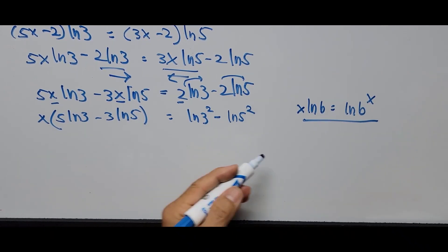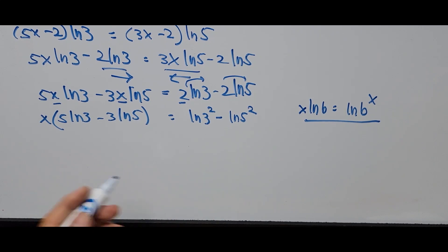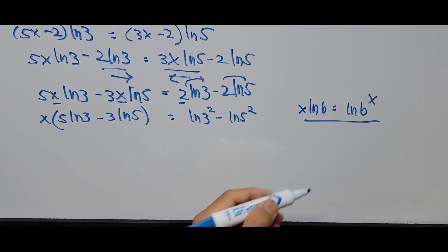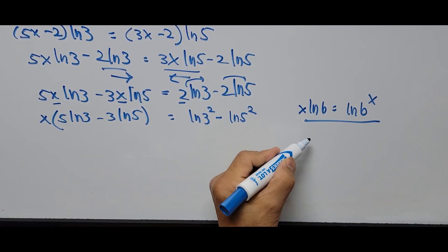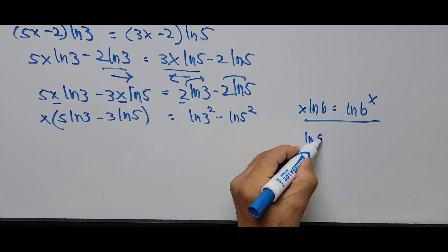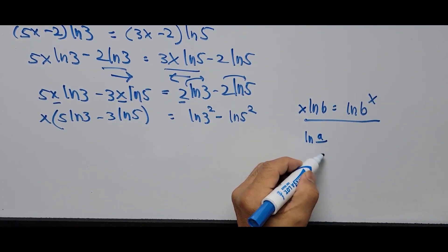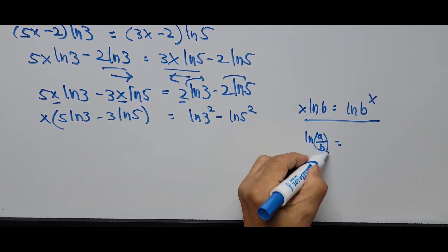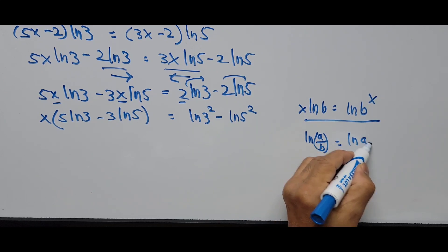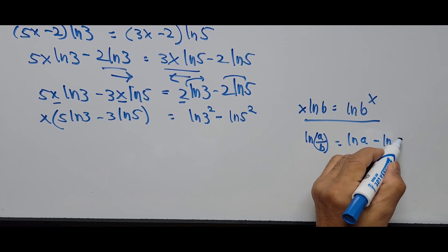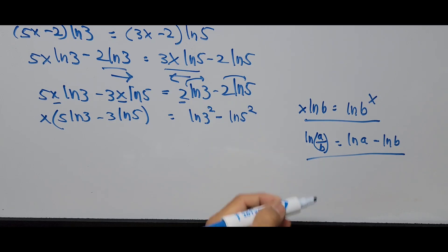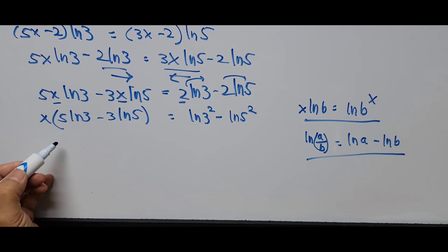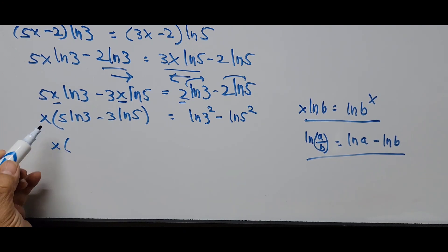We then apply the quotient rule of logarithms — ln of a minus ln of b equals ln of a divided by b — so the right side becomes ln of 3 squared divided by 5 squared. The left side is x times the factored logarithmic expression.